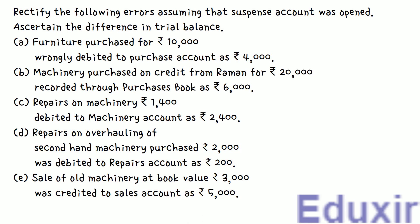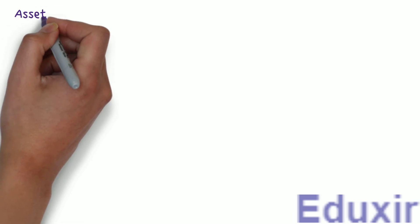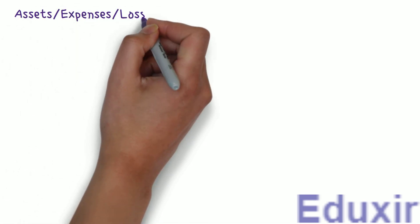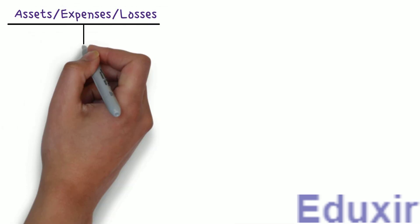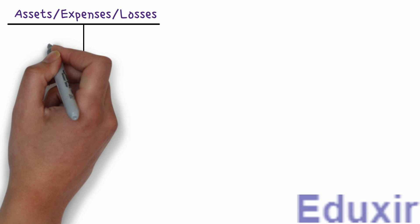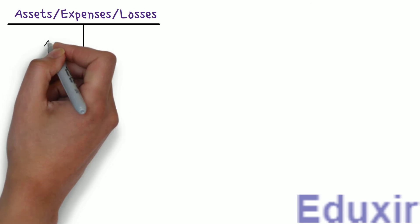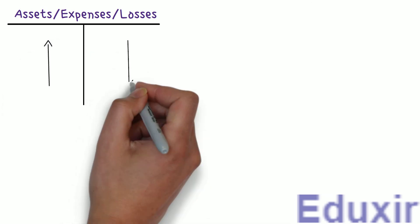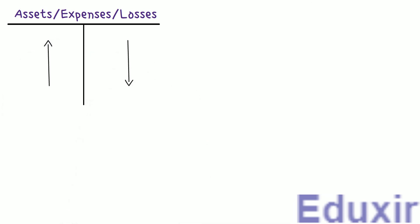Before we proceed with the analysis of these errors, let us first do a small recap. In case of assets, expenses, or losses, any increase in any of these should be debited and any decrease should be credited.